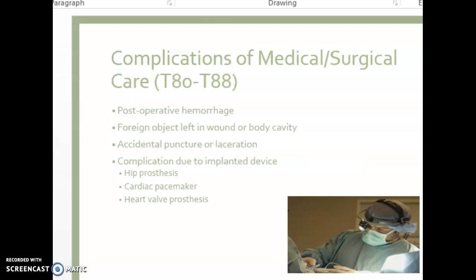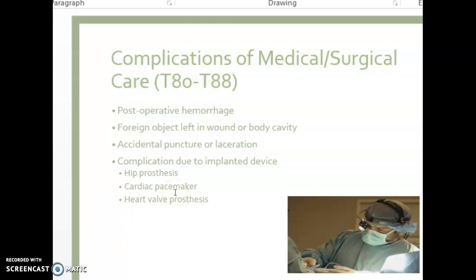Complications of medical and surgical care are part of Chapter 19 but at the back of it, between code categories T80 and T88. These conditions can include a post-op hemorrhage, a foreign body left in a wound or body cavity, accidental puncture or laceration, complications due to implanted devices like a complication from a hip prosthetic, cardiac pacemaker, or heart valve prosthesis. These are not uncommon to code.